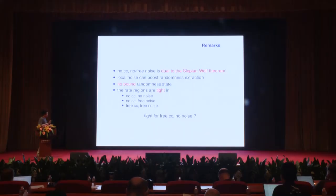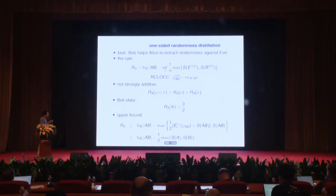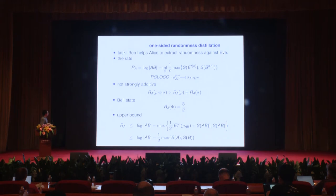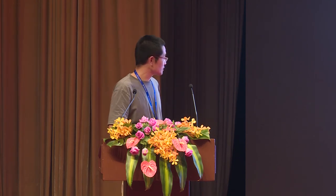We can prove that the rate regions are tight in the first three cases, but we cannot prove tightness for the fourth case where Alice and Bob can exchange quantum systems through a dephasing channel. For that case, we study the one-sided problem: maximizing randomness at one side as much as possible. We obtain the rate via a regularized formula, which is unfortunately not easily computable. We can prove it is not strongly additive. For a Bell state, the value is one and a half. We also have a computable upper bound.